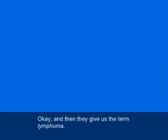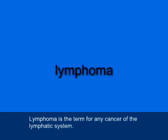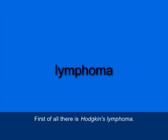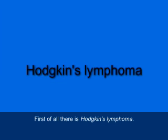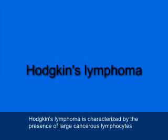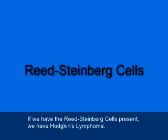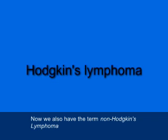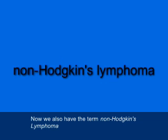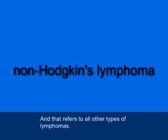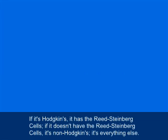They also give us the term lymphoma (L-Y-M-P-H-O-M-A), a term for any cancer of the lymphatic system. Lymphoma breaks into two types. First, there's Hodgkin's lymphoma, characterized by the presence of large cancerous lymphocytes called Reed-Steinberg cells. If we have the Reed-Steinberg cells present, we have Hodgkin's lymphoma. We also have non-Hodgkin's lymphoma, which refers to all other types of lymphomas. If it's Hodgkin's, it has the Reed-Steinberg cells. If it doesn't, it's non-Hodgkin's — it's everything else.